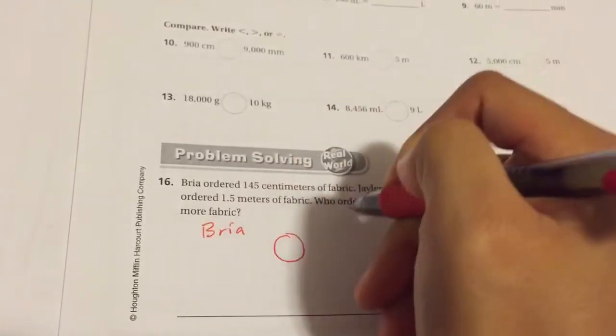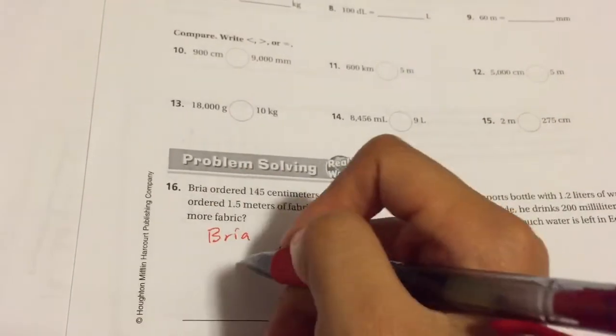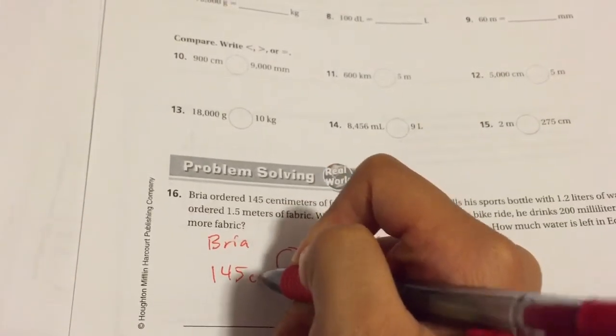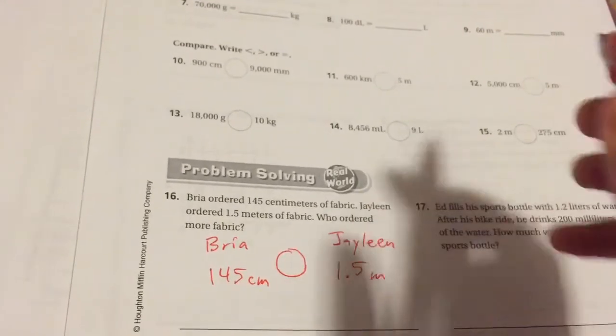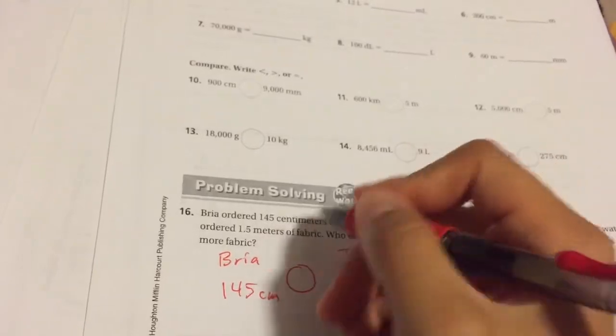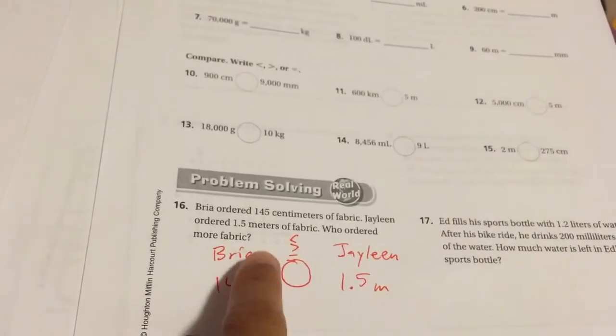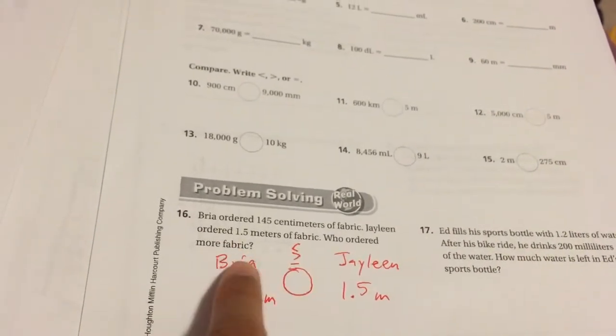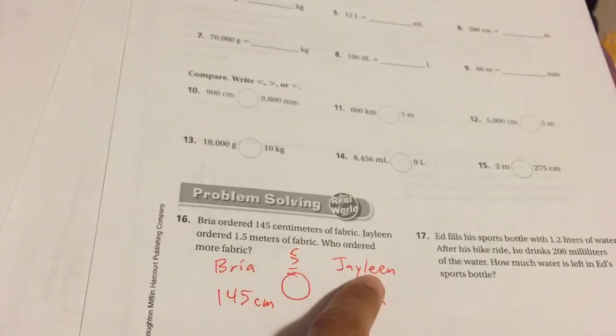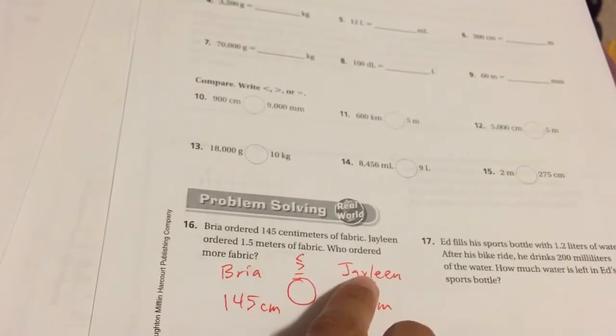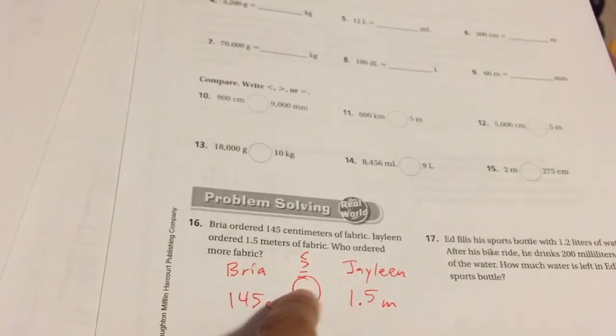We have Bria's amount, 145 centimeters, and Jaylene's order, 1.5 meters. Who ordered more? You're going to figure out if this is less than, greater than, or equal to. If it's less than, then Bria ordered less than Jaylene. If it's greater than, then Bria ordered more than Jaylene. If it's equal to, then they ordered the same amount.